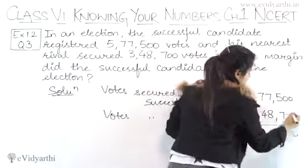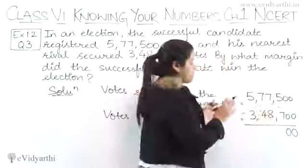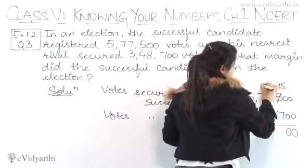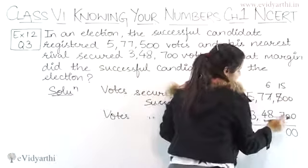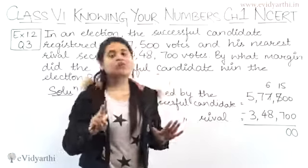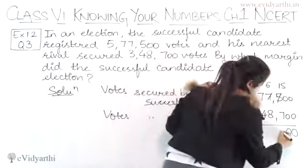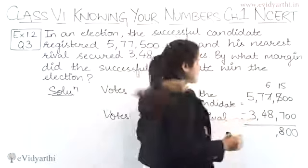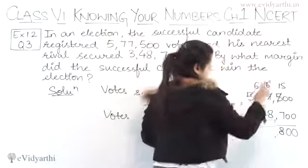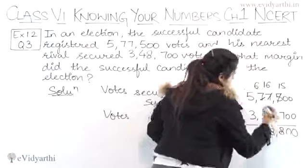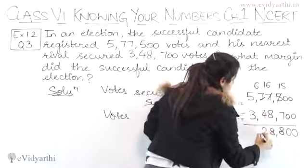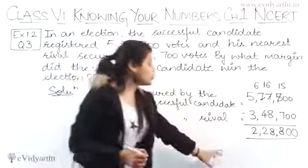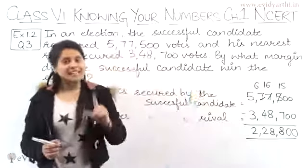0 minus 0 is 0. 0 minus 0 is 0 again. Then 5 minus 7 — we borrow, so it becomes 15. 15 minus 7 is 8. Then 16 minus 8 is 8. Then 6 minus 4 is 2. And 5 minus 3 is 2. So the winning candidate won by 2,28,800 votes.